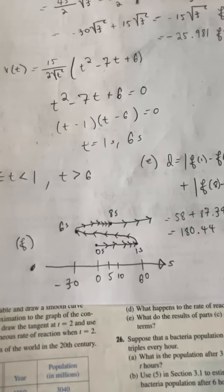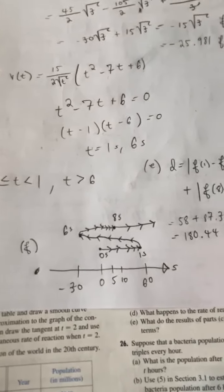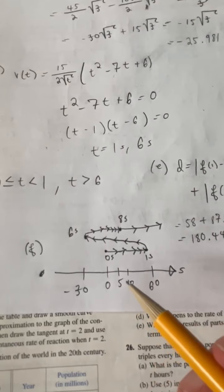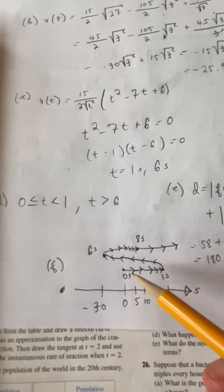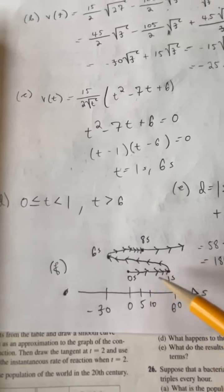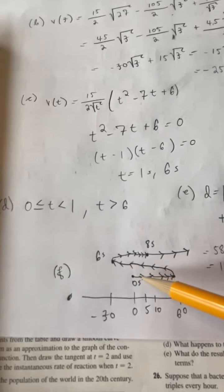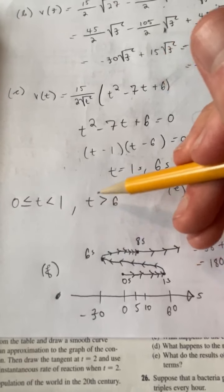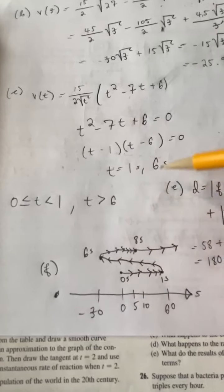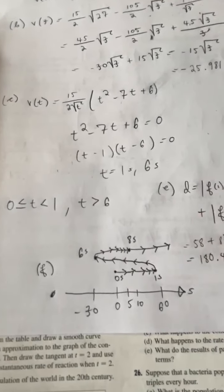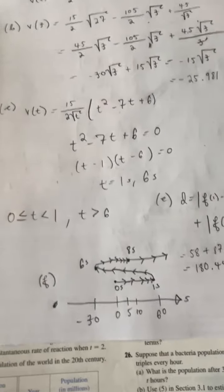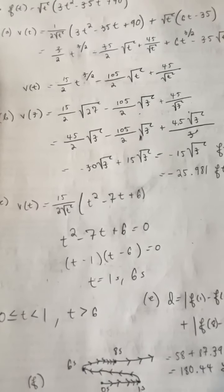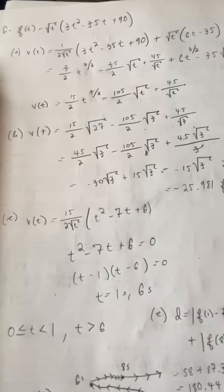Notice the motion diagram almost looks like a sideways mirror image of the actual function in terms of its shape. If you graphed position versus time, you'd be going up, then down, then back up — almost like a cubic function. So that is problem number six, and I hope these videos were helpful.